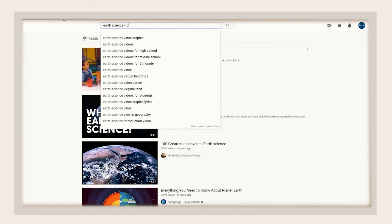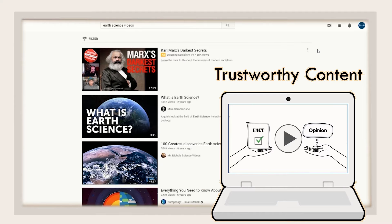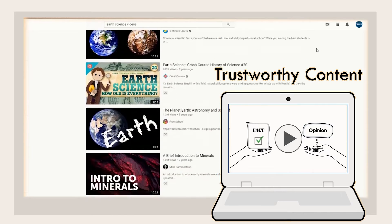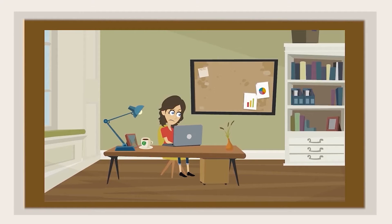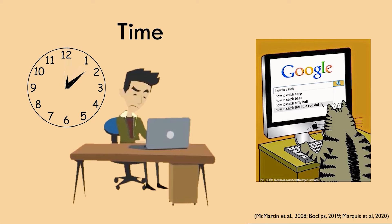However, challenges of finding useful Earth Science videos still exist. One big challenge is to find trustworthy content — many online videos are not scientifically accurate or can even be misleading. Another challenge is evaluating the effectiveness of an Earth Science educational video; many videos are not assessed and teachers may not be sure about their effectiveness. Last but not least, searching for useful videos can be time-consuming. Teachers on average can spend seven hours per week searching for videos, and some make their own.